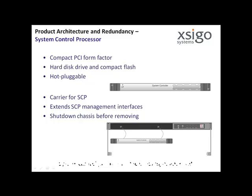The system control processor is the management focal point for all the processes running on the SEGO I.O. Director. It runs and monitors the management processes, a Postgres SQL database, the command line interface, and other supporting software. However, once the virtual interfaces are configured, the system control processor does not participate in the communications over the data path.